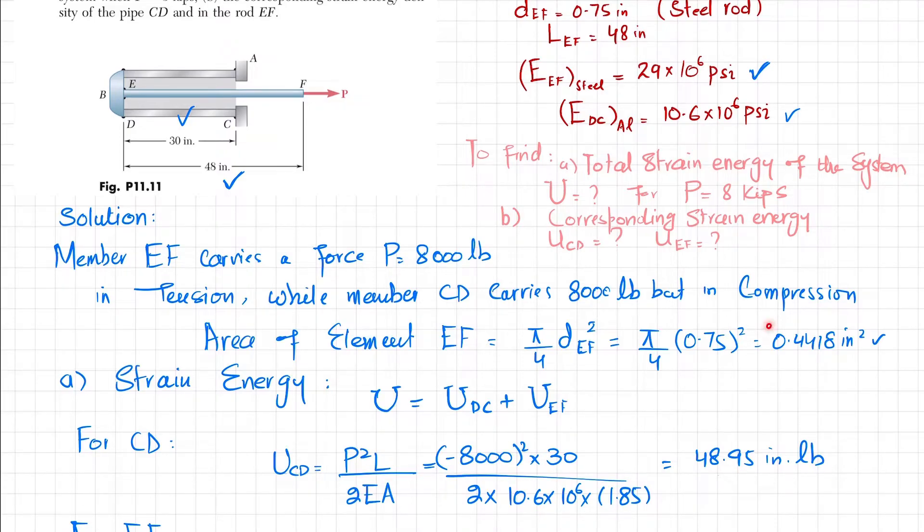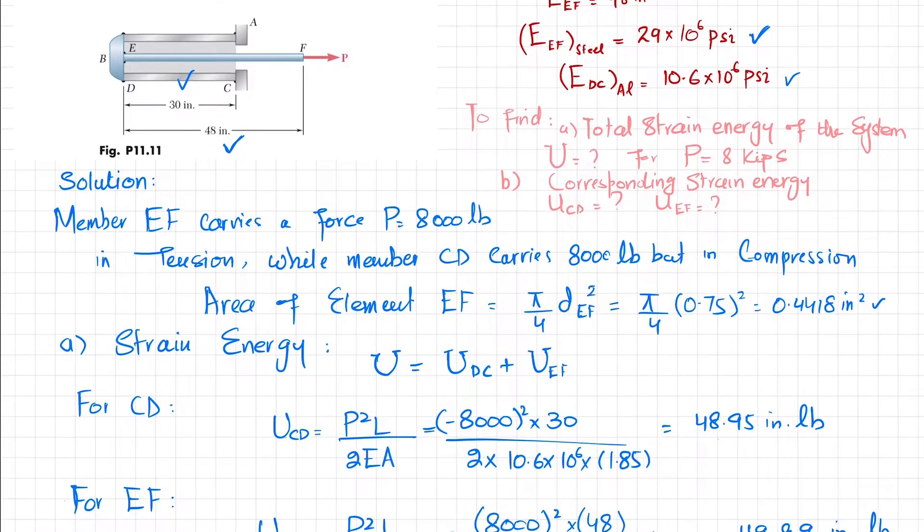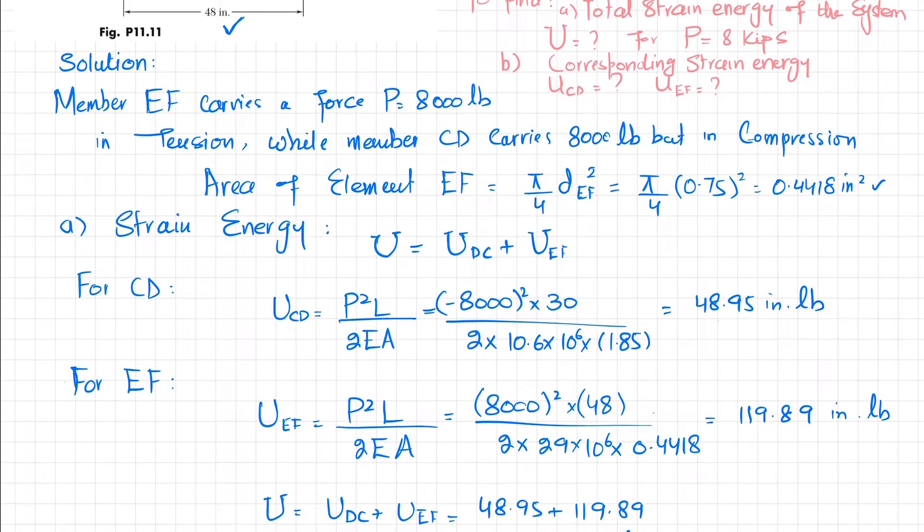In part A, we've been asked to find the strain energy. We know that total strain energy of the system equals strain energy in DC plus strain energy in rod EF. We will find them separately and add them to get the total strain energy.